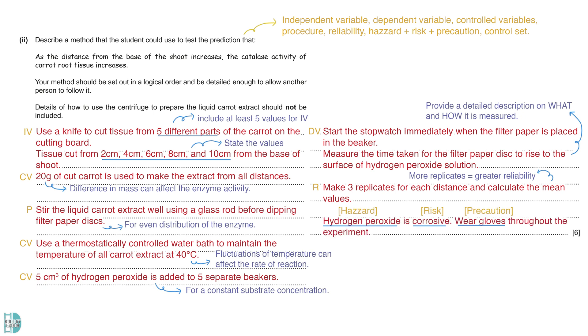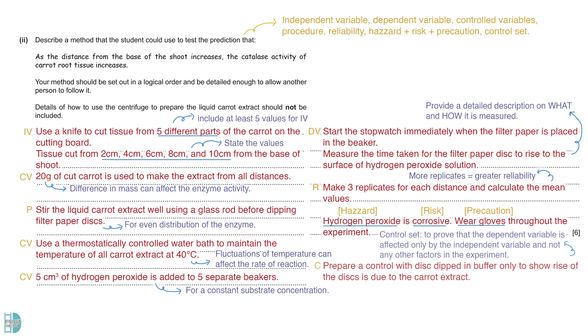When writing about safety precautions, you have to identify the hazard, state the risk, and then describe the precautions taken. The hydrogen peroxide solution is corrosive. We should wear gloves throughout the experiment. Lastly, we will prepare a control set. A control set is there to prove that the dependent variable is affected only by the independent variable, and not any other factors in the experiment. So, we can prepare a disc dipped in buffer solution only for the experiment. This will show that the rise of the disc is due to the presence of carrot extract.